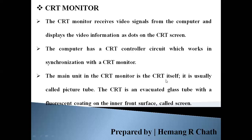The CRT is usually called a picture tube. In a picture tube, the CRT is an evacuated glass tube with a fluorescent coating on its inner front surface, called the screen. Generally, the screen is coated with a fluorescent material, which is phosphorous.